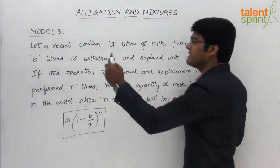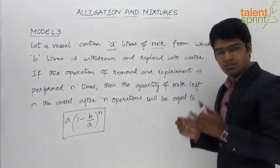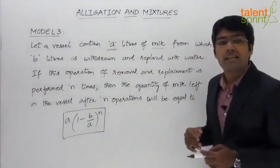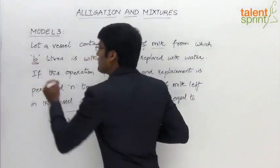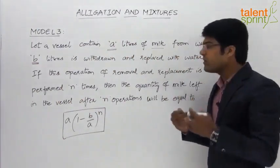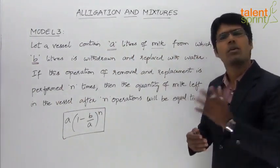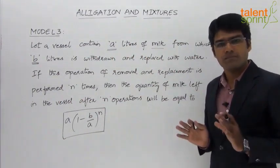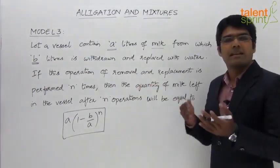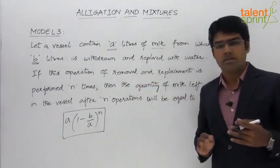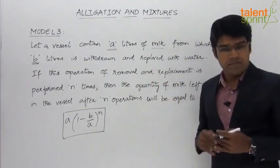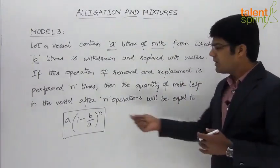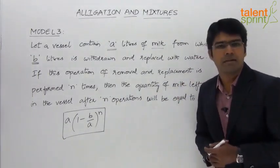We have a vessel which contains A liters of milk. Out of this A liters of milk, B liters is withdrawn, removed, and replaced with an equal quantity of water. So if you are removing B liters of milk, we put back B liters of water. This operation of removing B liters and replacing with water is performed n times. Then the quantity of milk left in the vessel after n operations will be equal to A into (1 minus B by A) whole to the power of n.